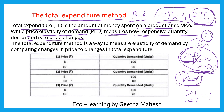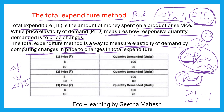So let us discuss with the table and diagram. The total expenditure method is a way to measure elasticity of demand by comparing changes in price — represented as delta P — to changes in total expenditure. If we compare these two variables, we can measure the elasticity of demand. This method is called the total expenditure method.